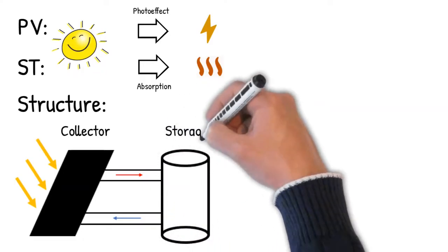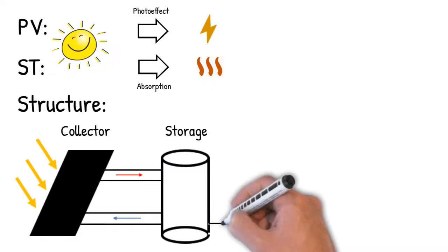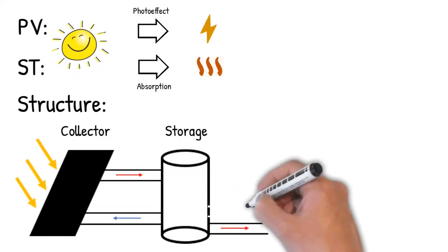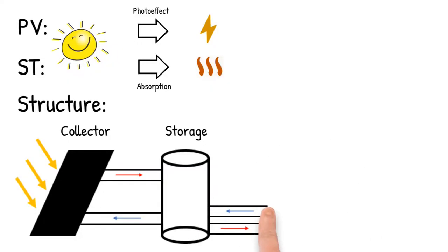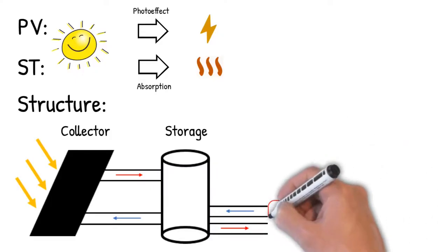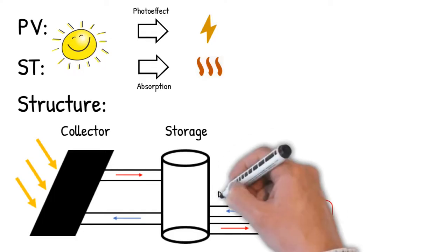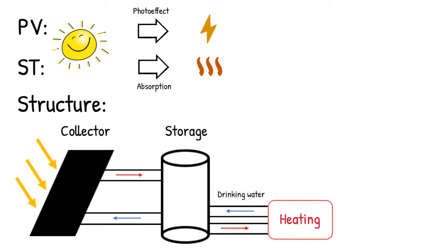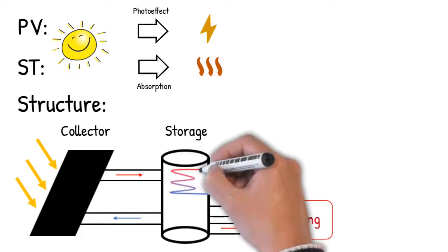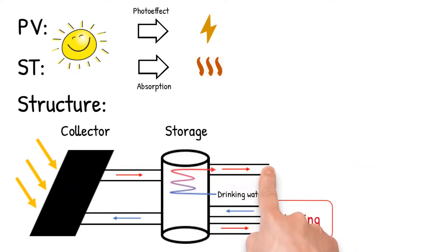The liquid in the heat storage tank is heated up, and as soon as the heat is needed, for example for showering or heating the home, the heat can be taken from the storage tank. For heating, the water that also flows through the collectors can be used directly. For drinking water, on the other hand, at least one additional heat exchanger is used to prevent impurities.